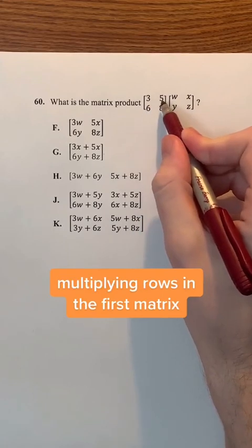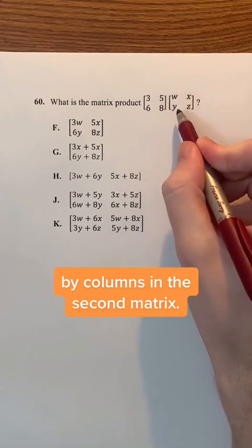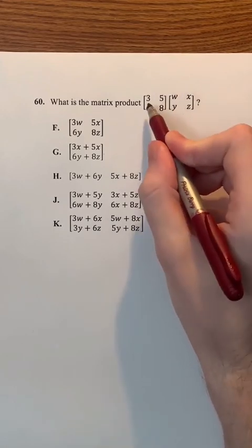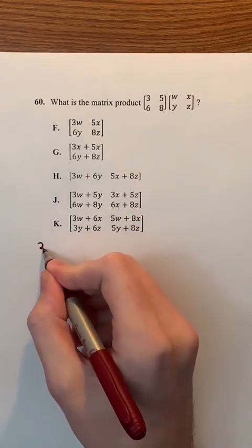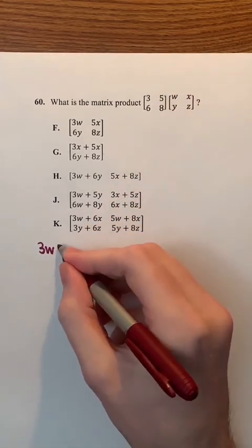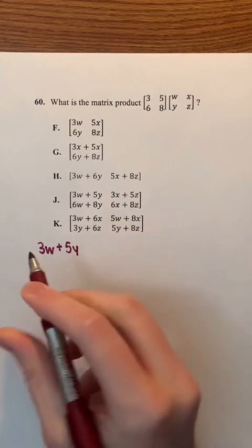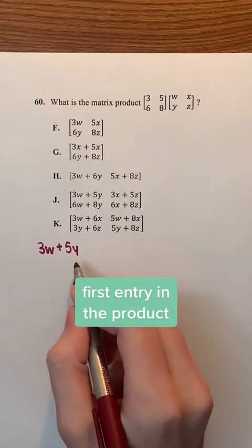Now we're going to begin multiplying rows in the first matrix by columns in the second matrix. So first, we're going to have 3 times w, which is 3w. And then, we're going to add 5 times y, which is 5y. So 3w plus 5y is going to be the first entry in the product.